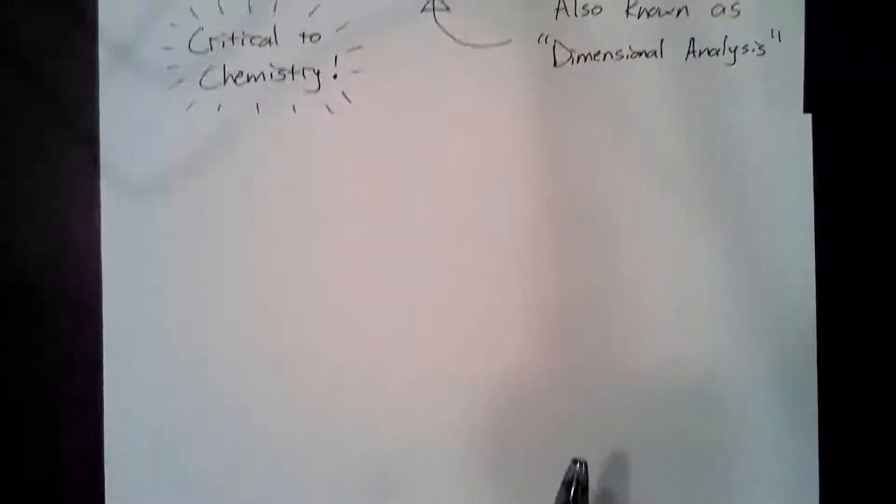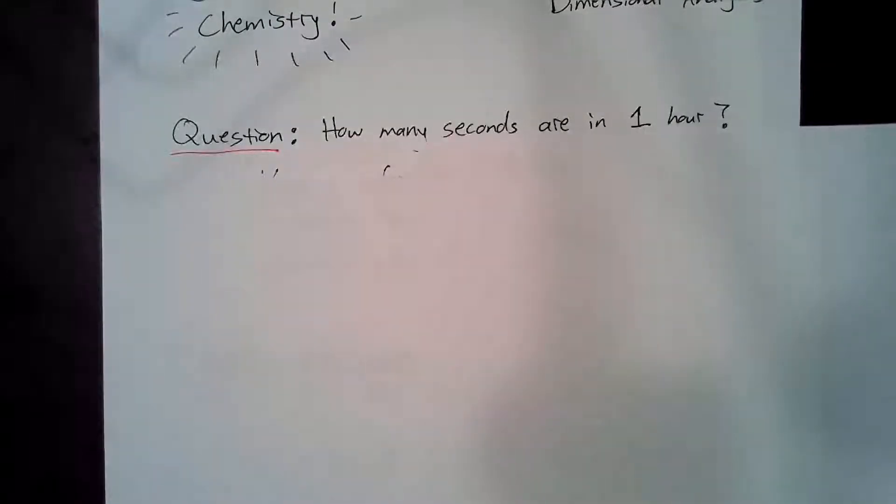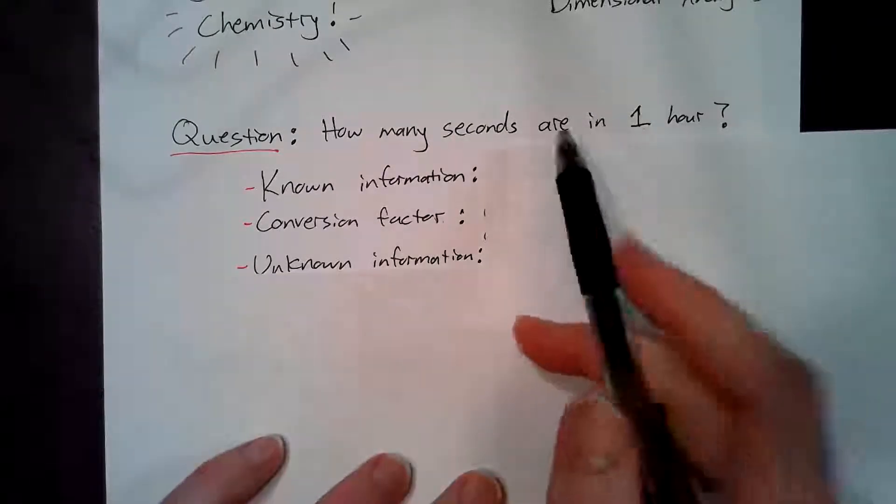So let's move on with just one example where we're going to find out how many seconds are in one hour. Well, that's a pretty simple calculation. You guys could probably do it on your own, but I'll show you the step-by-step way to do this. First, we want to find three things, information that we can glean from the problem.